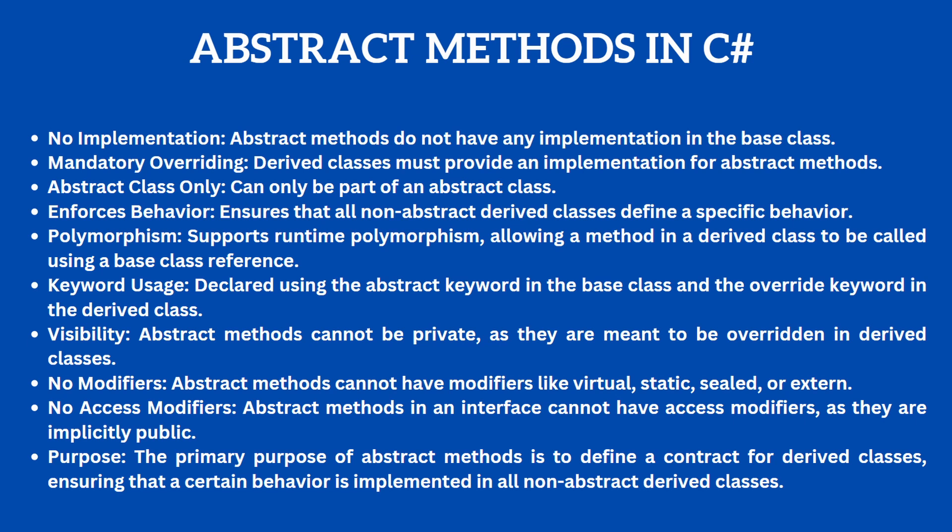Now let's look at the features of abstract methods in C#. Abstract methods do not have any implementation in the base class. Derived classes must provide an implementation for abstract methods. Abstract methods can only be part of an abstract class. Just like virtual methods, abstract methods cannot be private since they are meant to be overridden in derived classes. Also, abstract methods in an interface cannot have access modifiers as they are implicitly public. The main purpose of abstract methods is to define a contract for derived classes, ensuring that a certain behavior is implemented in all non-abstract derived classes.